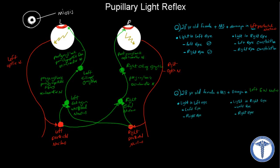Here's another example. Again, we have the same patient, but now the damage is in the left Edinger-Westphal nucleus, which is right here. Now, what is going to happen if we shine the light in the left eye? The signals are going to travel through the left optic nerve, go to the left pre-tectal nucleus, and from here we're going to have two pathways. One pathway sends a signal from the pre-tectal nucleus to the left Edinger-Westphal nucleus, which in this case is damaged. So there won't be any signals sent beyond this point, and the left eye is going to remain unchanged — no change in the left eye.